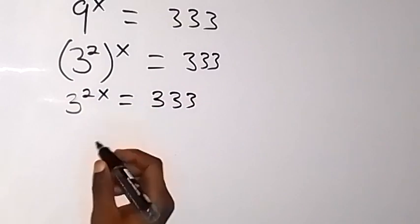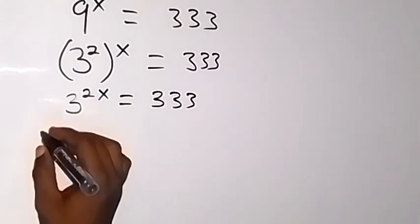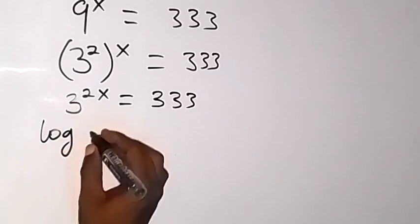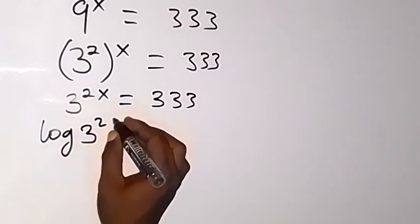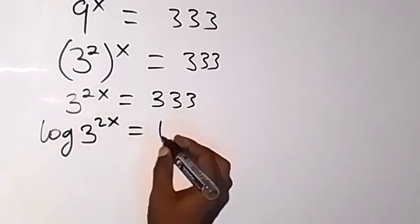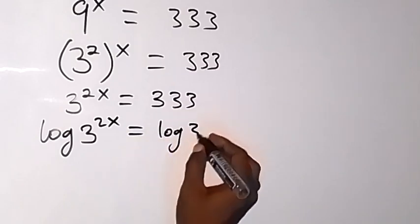So let's take the log. Let's take the log on both sides. We have log 3 raised to power 2x gives us log 333.